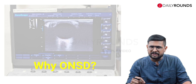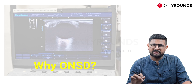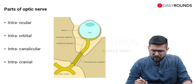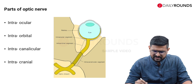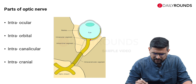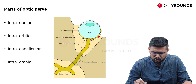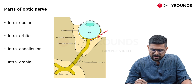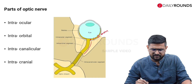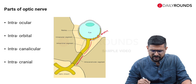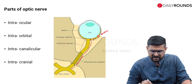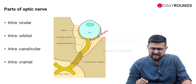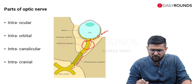For that, we need to know a bit about the anatomy of the optic nerve. If you look at this image, you have the optic nerve with four parts. The first part, about 1 to 2 millimeters in length, is the intraocular part. Then you have the intraorbital part, then the intracanalicular part, and finally the intracranial part. Our area of interest is the proximal intraorbital part.